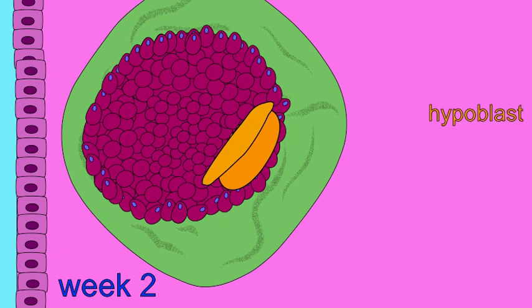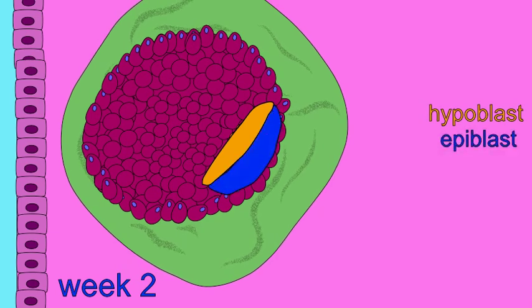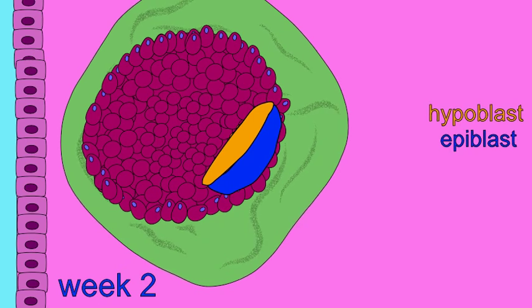The hypoblast, columnar cells which will eventually compose the endoderm and yolk sac, and cuboidal cells of the epiblast, which will eventually compose ectoderm and the amnion.